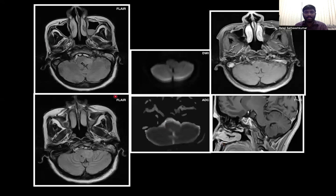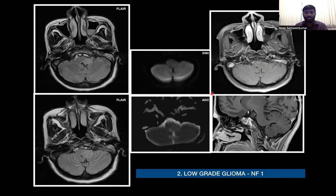Moving on to the next case, we see a small rounded, relatively well-defined lesion likely arising from the medulla oblongata, extending into the left cerebellomedullary system, which appears hyperintense on FLAIR images, shows no restricted diffusion, and on post-contrast study there is no post-contrast enhancement seen. This is a low-grade tumor, likely a low-grade glioma in a case of neurofibromatosis 1.